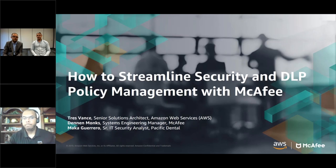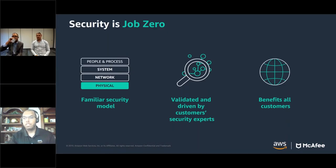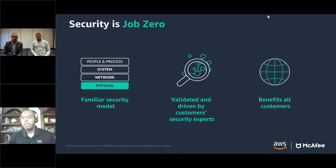Let me give you some background on the AWS perspective. What I'm here to talk about today is security, identity, and compliance — three separate but very important things. At AWS, security is job zero. You may be familiar with a model of people, process, systems, and network. All of those are accomplishable in the cloud using identity and access management, security groups, and AWS services as foundational building blocks.